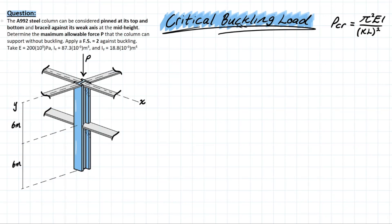We have an A992 steel column that's considered pinned at the top and bottom and braced against its weak axis at the mid-height. We need to determine the allowable force P that the column can support without buckling and apply a factor of safety of 2.